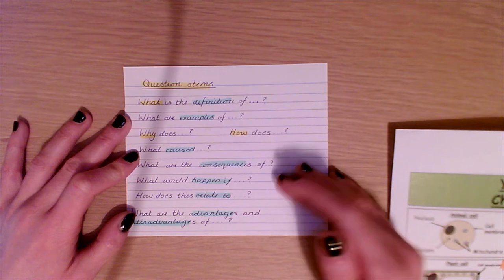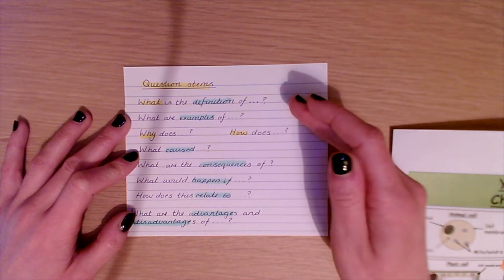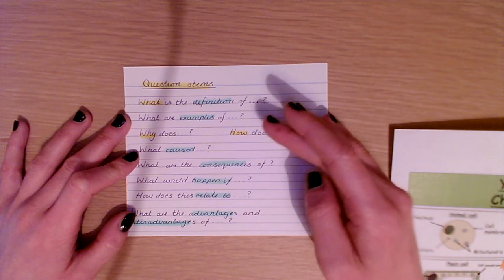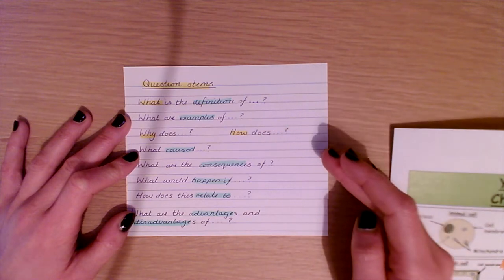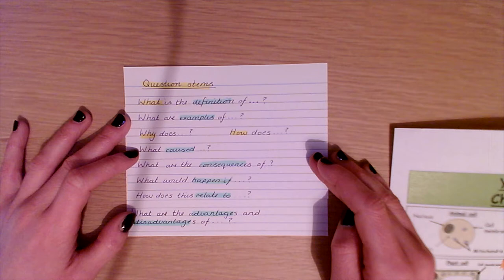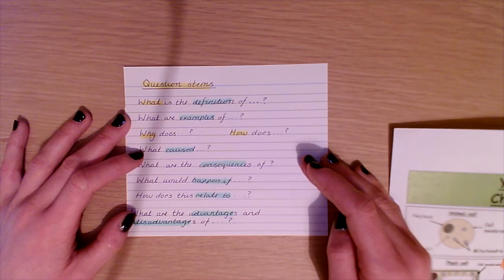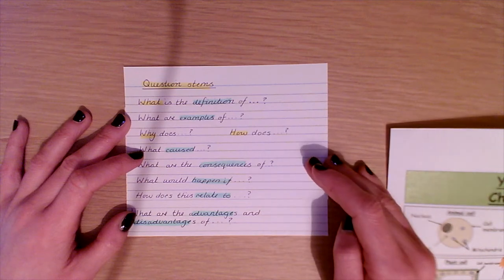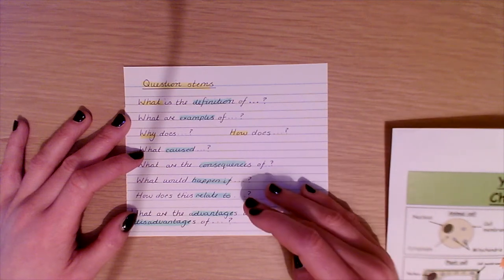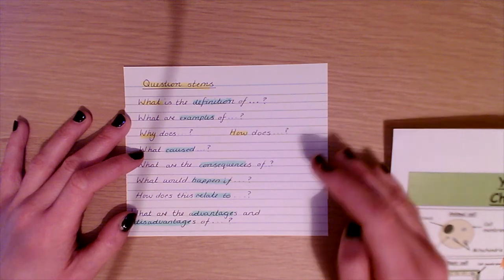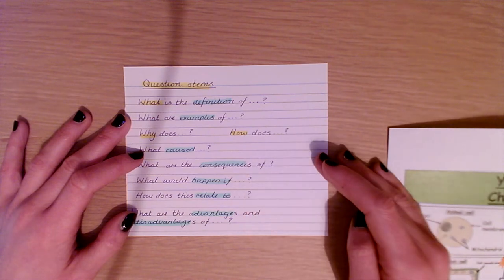For example, you could ask: what is the definition of? What are examples of? Why does something happen? Or how does something happen? You could consider the causes or consequences. You could ask, what would happen if? How this relates to other ideas? And what the advantages and disadvantages are?